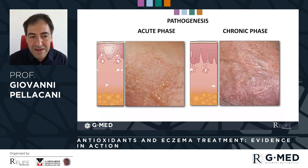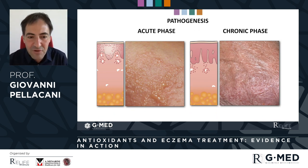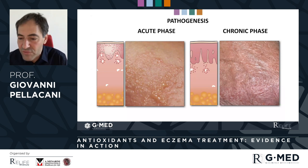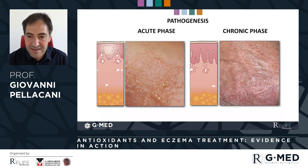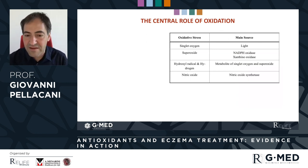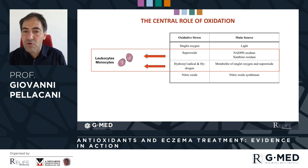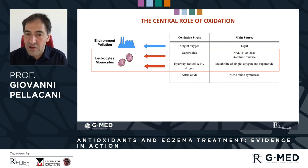This explains why we have different pictures: the acute phase presents with more vesicles and more inflammation, then the chronic phase presents with more scaling and reduced redness, but with a thickened and hyperplastic skin that leads later to lichenification. The role of oxidative stress is central in this process of eczema, and it is mainly generated by leukocytes and monocytes, but other sources also contribute to this oxidative stress.